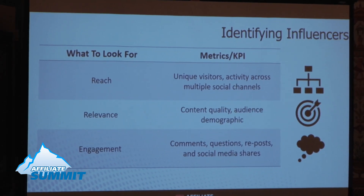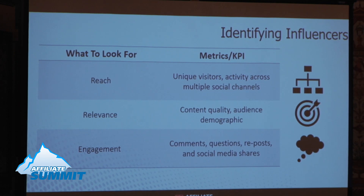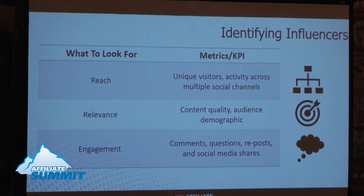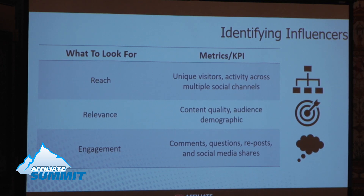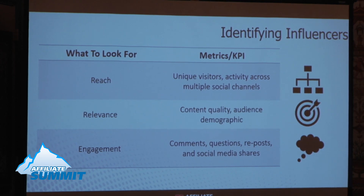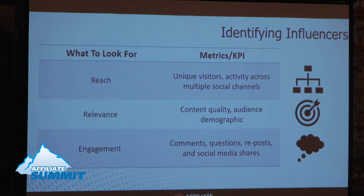Reach is basically the depth and breadth of an influencer's footprint in the space — things like unique visitors to their blog and activity across multiple social channels. There's a school of thought within influencer marketing that reach is actually the least important metric, and that relevance and engagement with a 'less is more' philosophy are actually more important. Reach is one of the easier metrics to find, though it became harder after December 31st when Compete's public data was discontinued.